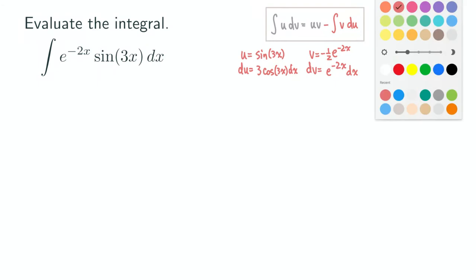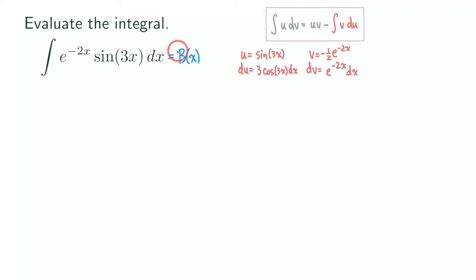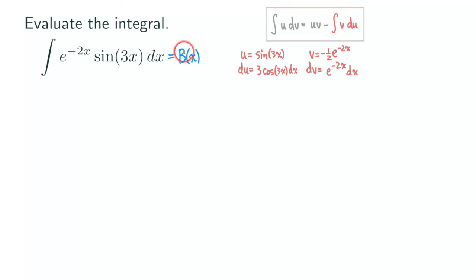Once you get the table set up, you are going to start writing down the right-hand side. But for this particular type of problem, we should give this integral a name. We can call it B of x — this is not B times x, it's function notation, so B is a function in terms of x. We call this B of x just to reduce writing; instead of copying the whole integral, we just write B.